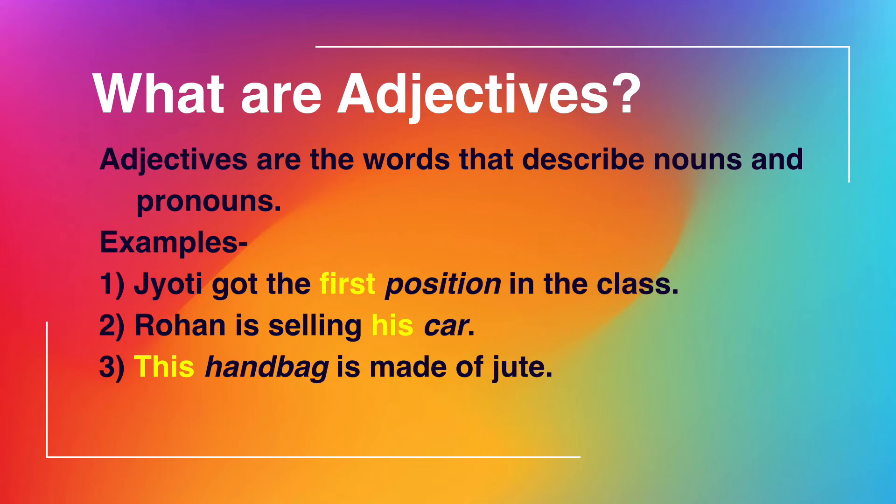In the third sentence, 'this handbag is made of jute' — 'this' is describing something about the noun, that is handbag. So 'this' is the adjective. Likewise there are many examples you can give, and there are many examples in your book too.